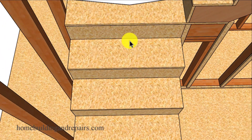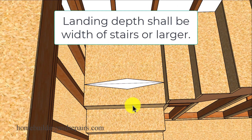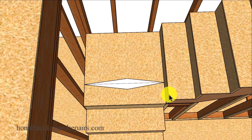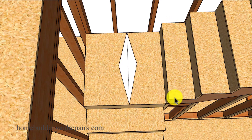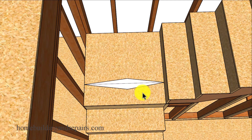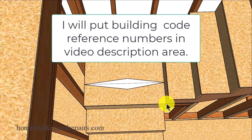Next up, let's take a look at the minimum width or depth of the stair landing itself. According to these building codes, the depth of the stair landing will need to be the same as or larger than the width of the stairway — and that applies to both the top and the bottom landing. So the depth of this landing here will need to be the width of the stairway or larger. This used to have a 36-inch minimum, the same as the minimum stairway width, but they have changed the verbiage on it. Again, these building codes are from the 2021 Residential Building Code book.